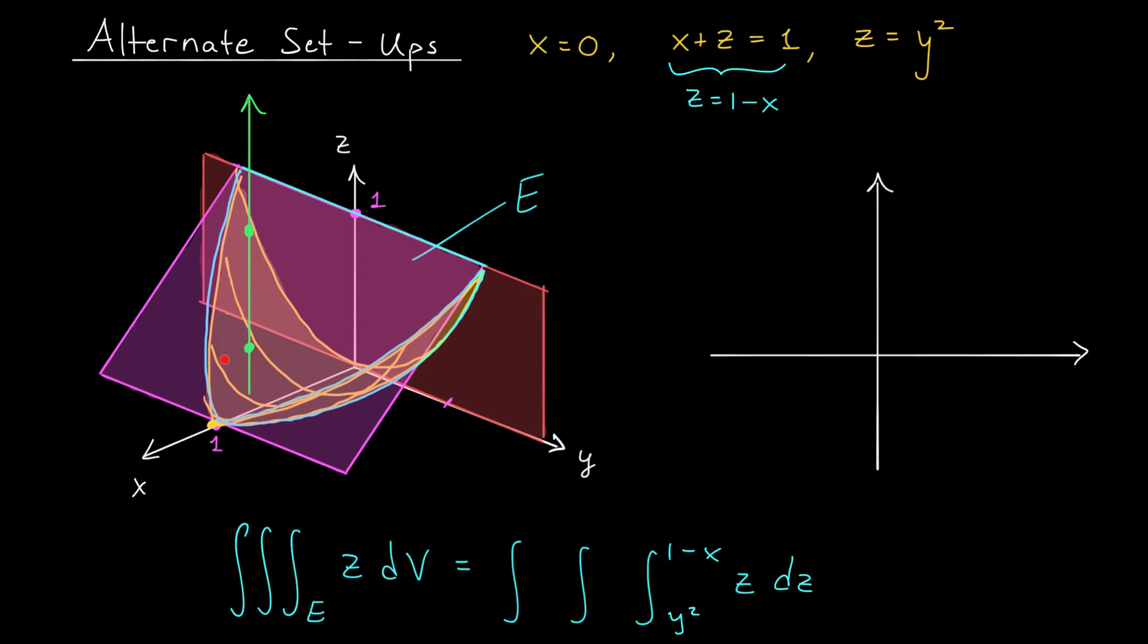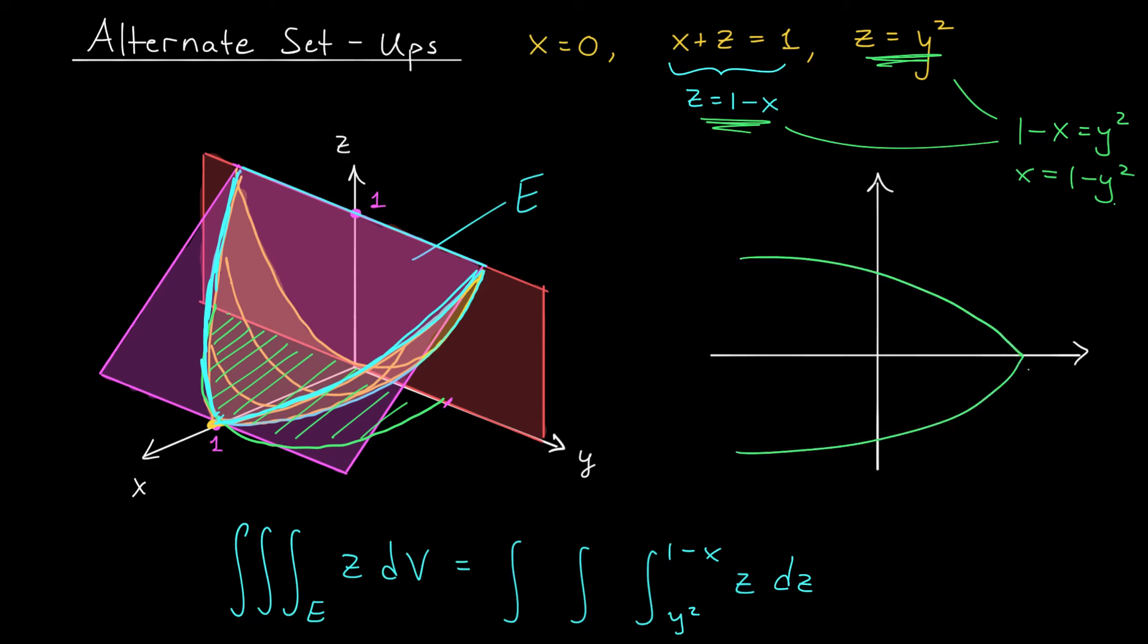To figure out what's happening with x and y, we have to project this entire region E down onto the xy plane, and I think you'll see we'll again get some sort of a parabola. To figure out the equation of this parabola, we notice that this parabola is really coming from this curve right here, being projected down into the xy plane. This curve is the intersection of our yellow parabolic cylinder, z equals y squared, and our pink plane, z equals 1 minus x. Putting these equations together, we find that 1 minus x is equal to y squared, and by rearranging, we get x equals 1 minus y squared. Ah, that's a parabola in the xy plane that opens leftward.